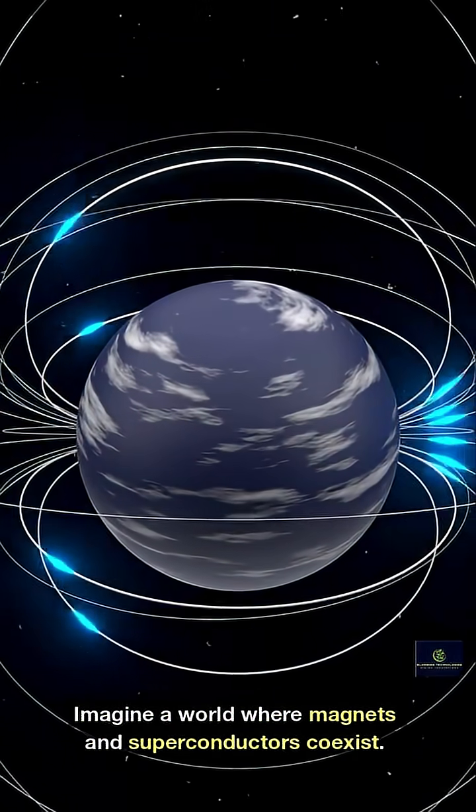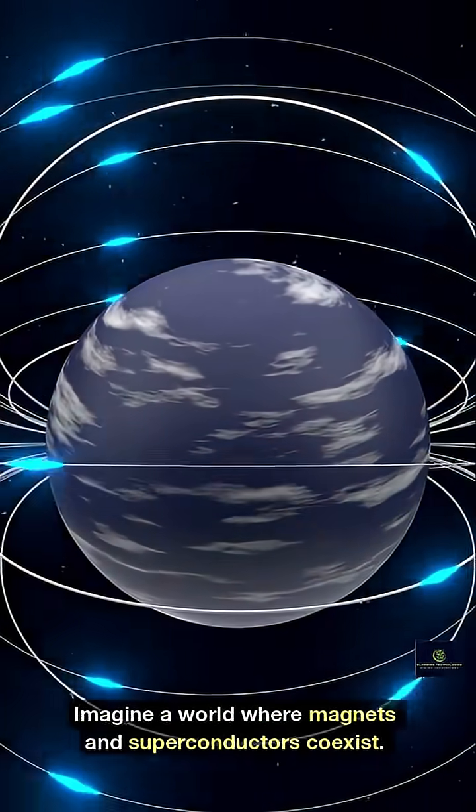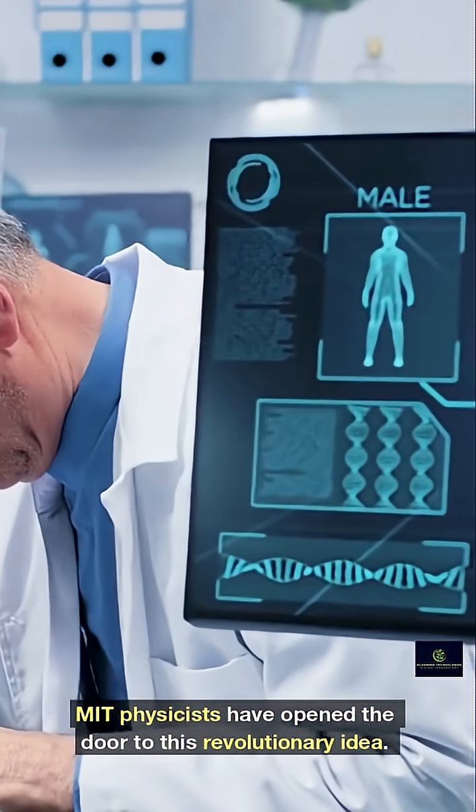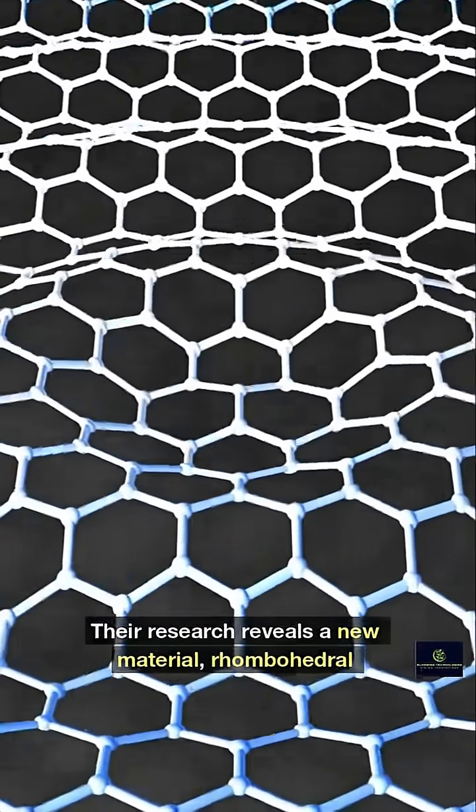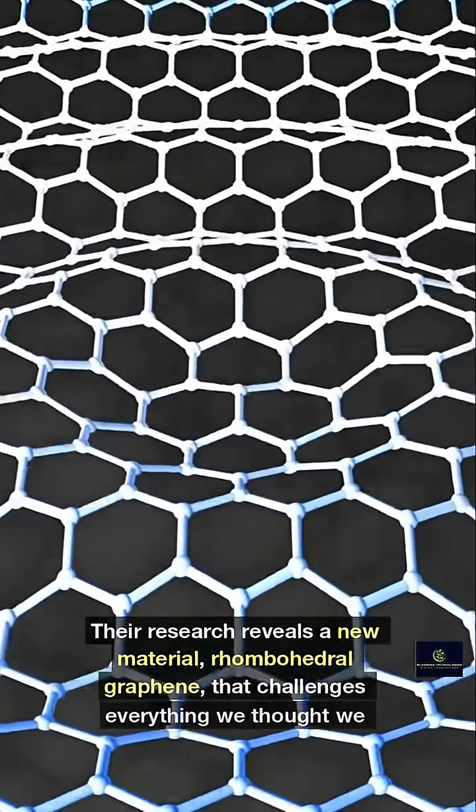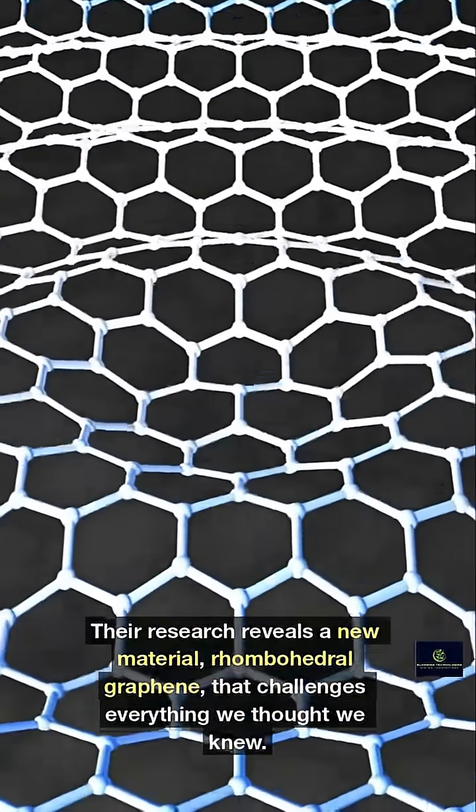Imagine a world where magnets and superconductors coexist. MIT physicists have opened the door to this revolutionary idea. Their research reveals a new material, rhombohedral graphene, that challenges everything we thought we knew.